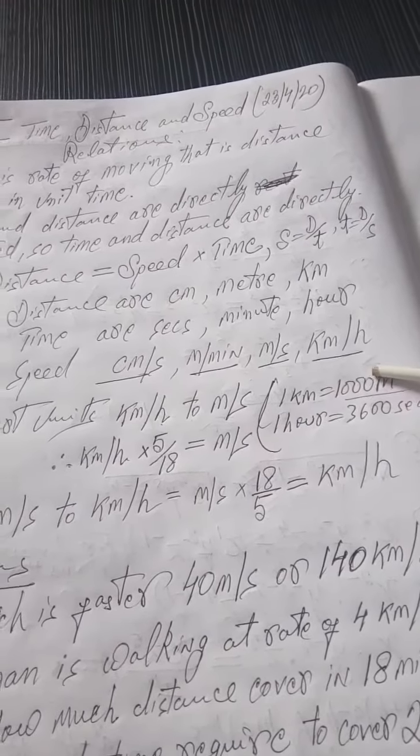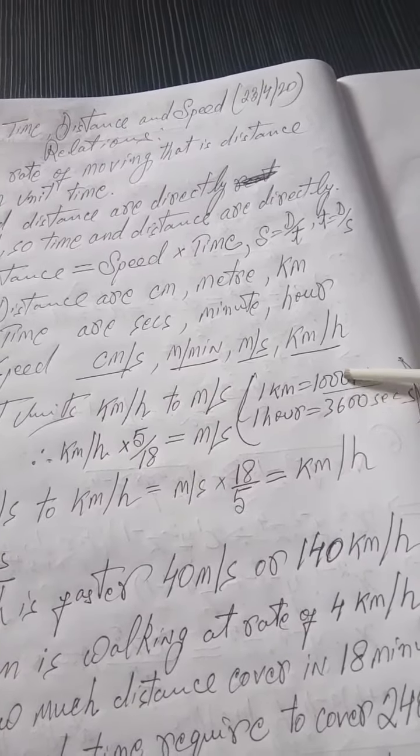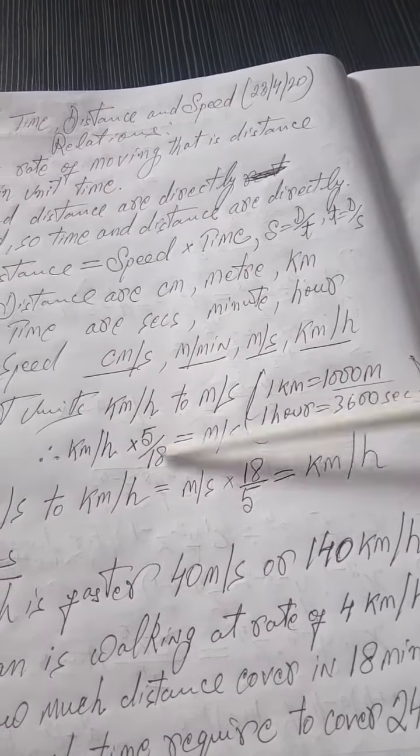As 1 kilometer is 1000 meter, 1 hour is 3600 seconds. If you cancel these numbers, you get 5 by 18.